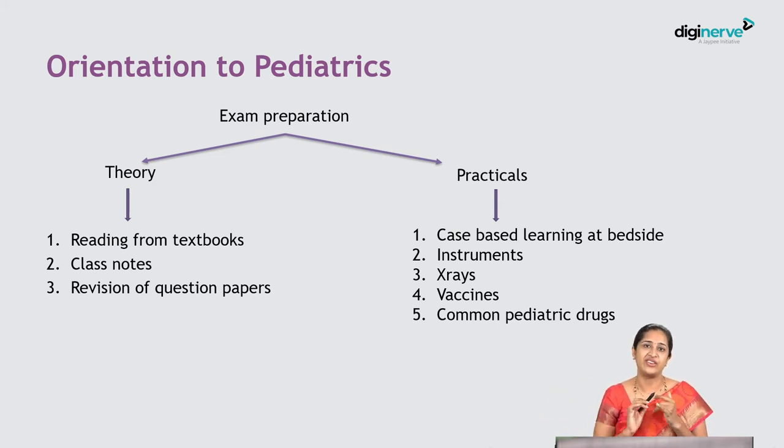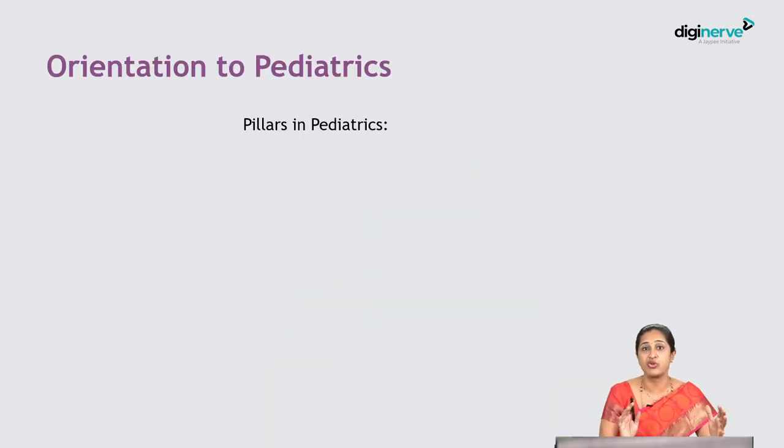X-rays, instruments, diet, nutrition, vaccines, and drug trays are all highly scoring areas — anything you answer correctly gets you full marks. Try to put these into your head so recall comes quickly. Learn important special aspects of each so you can answer appropriately when questioned. In the event of getting a tough case, good knowledge of instruments, x-rays, vaccines, and drugs will help you recover marks you might have lost in case-based discussions.